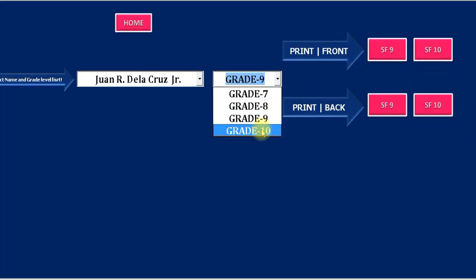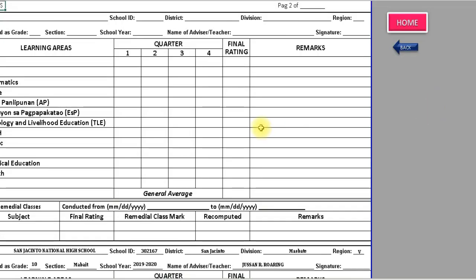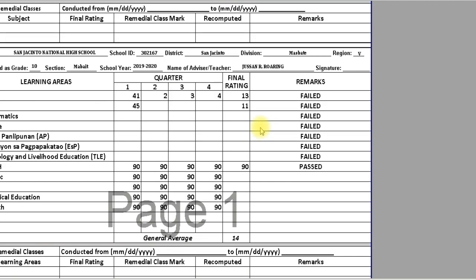Now we select Grade 10 — the Grade 7, 8, and 9 data has been hidden, and the data visible is for Grade 10.